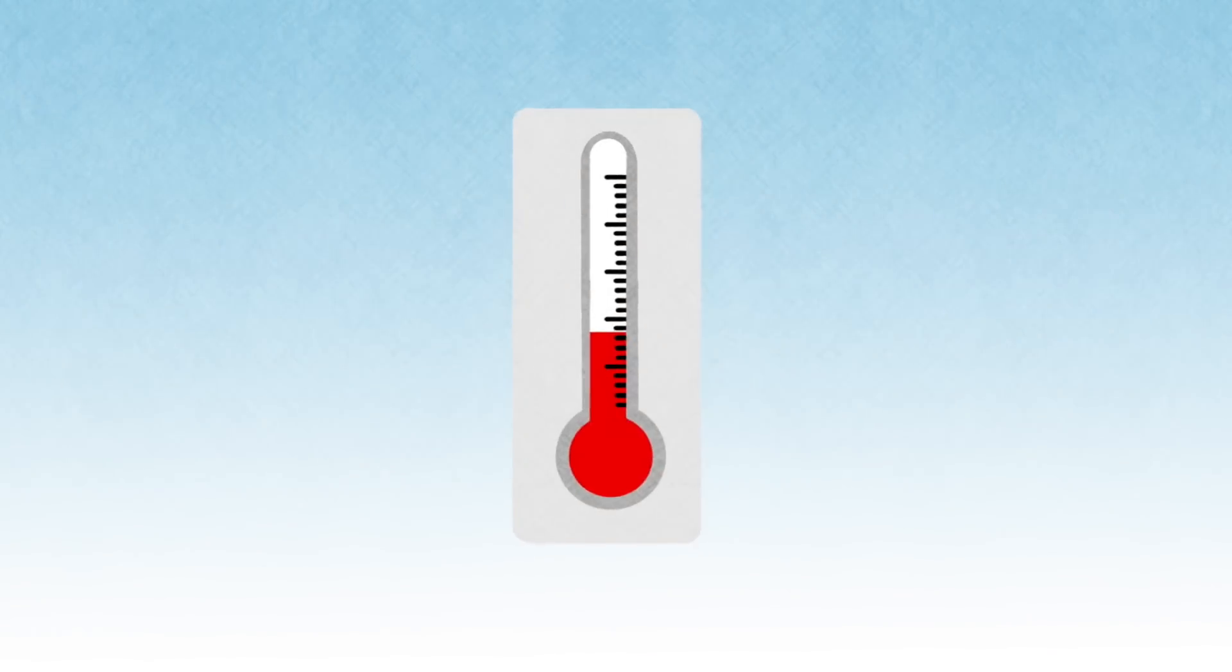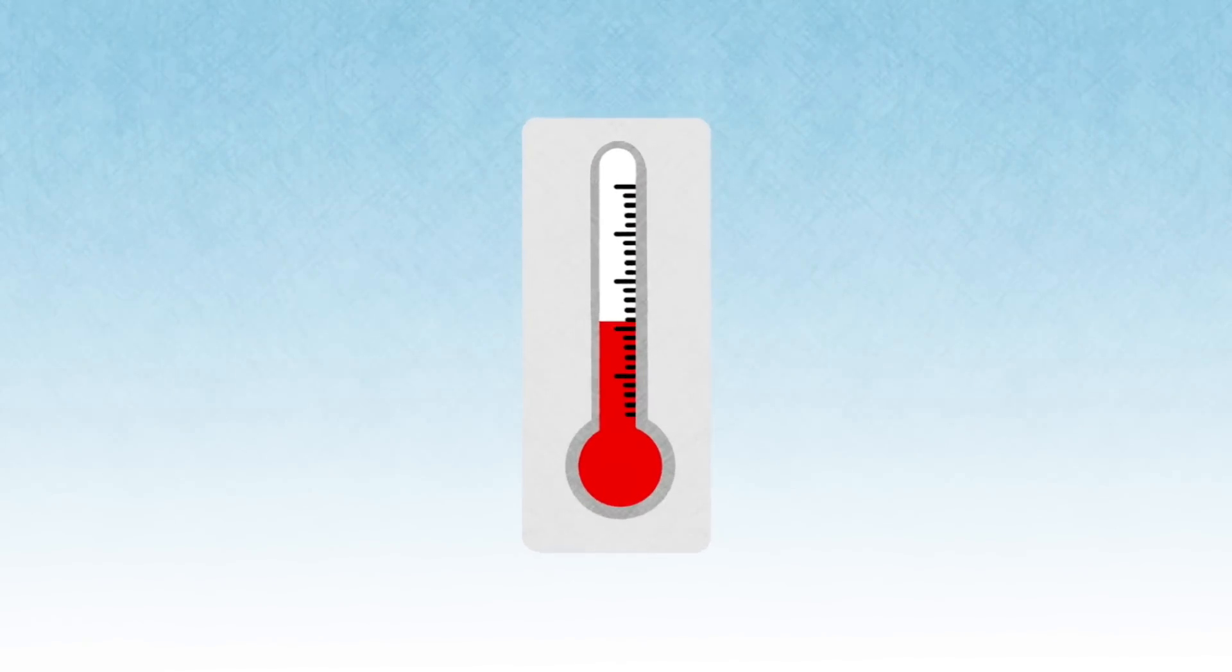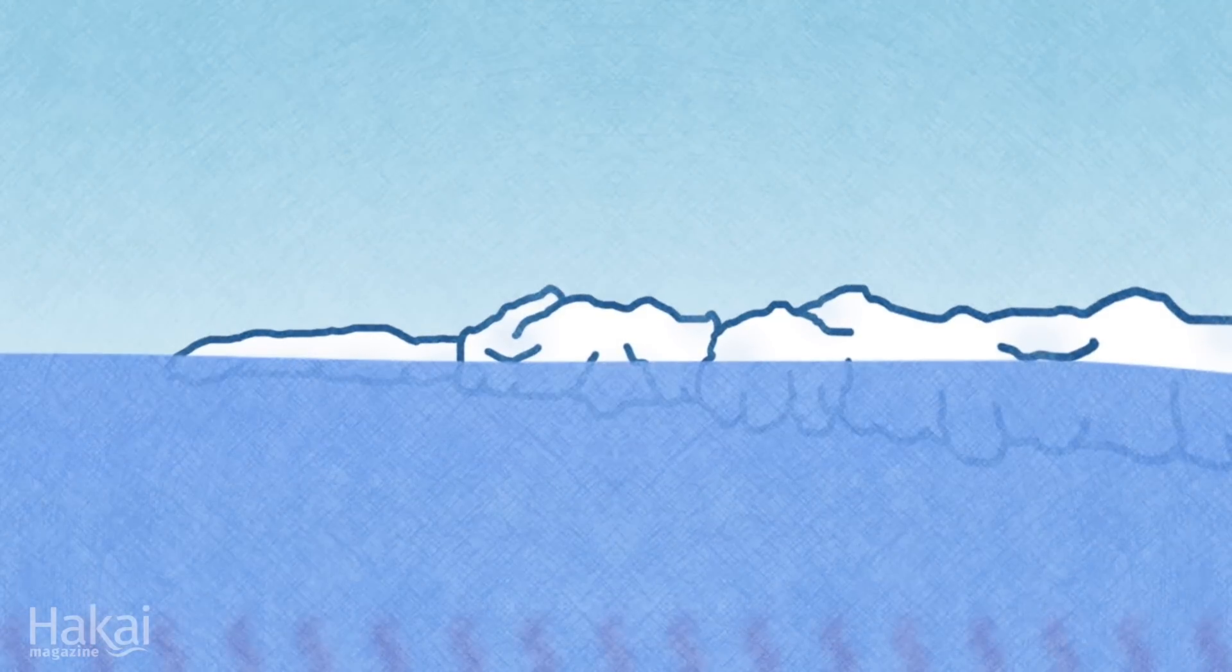Above the ice, heat from the sun is fairly constant over long periods of time, and air temperature, though warmer than usual, can't account for all the ice loss. This leaves the ocean below.